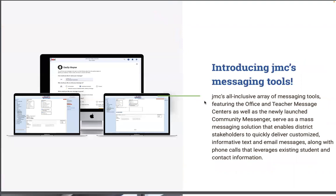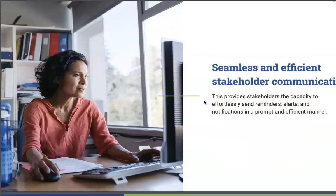JMC's all-inclusive array of messaging tools featuring the teacher and office message centers, as well as the newly launched community messenger, serve as a mass messaging solution that enables district stakeholders to quickly deliver customized, informative text and email messages, along with phone calls that leverage existing student and contact information. This provides stakeholders with capacity to effortlessly send reminders, alerts, and notifications in a prompt and efficient manner.